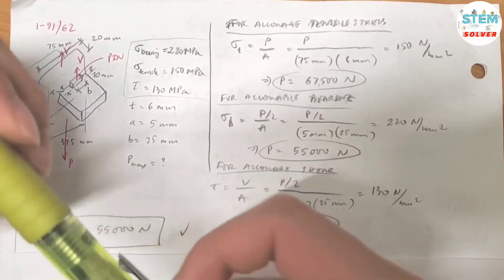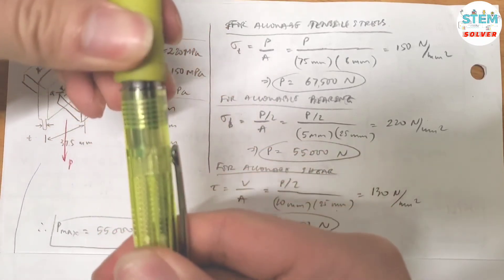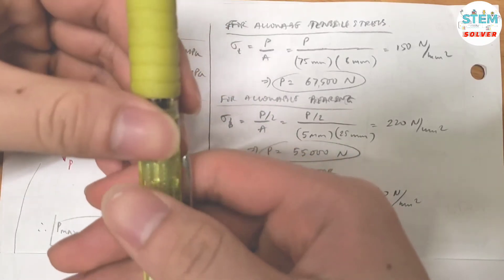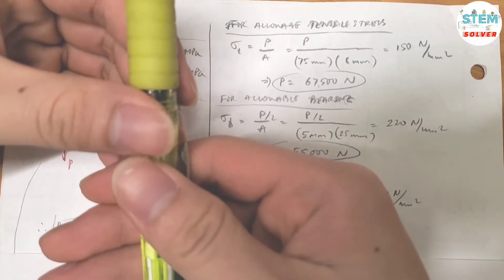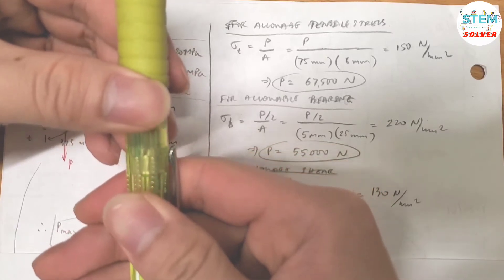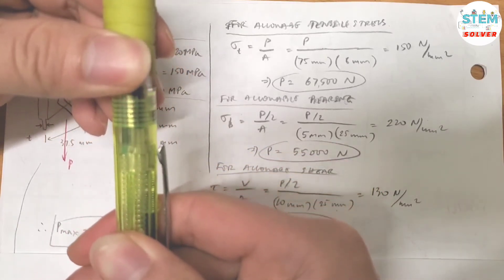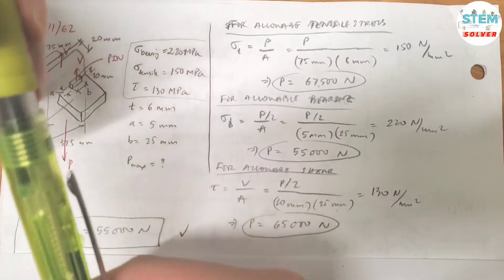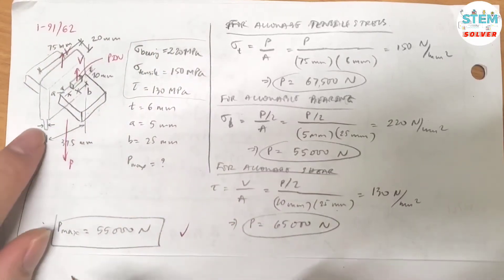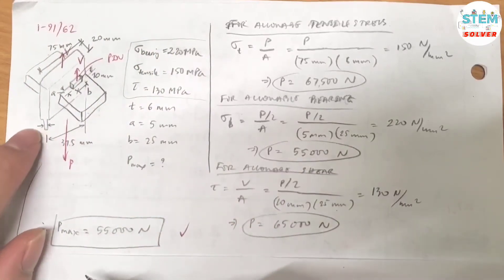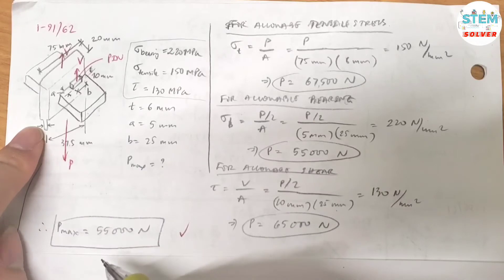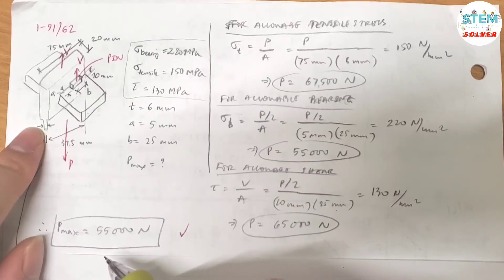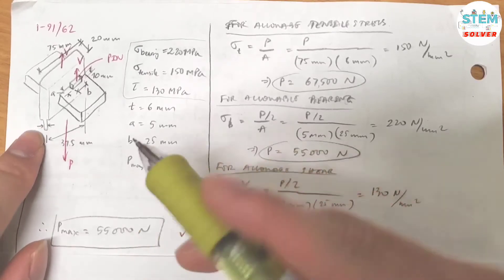Tensile stress tends to pull the object apart — it applies to this thin portion down here. You can refer to the figure for better visualization.